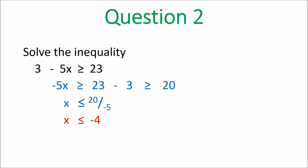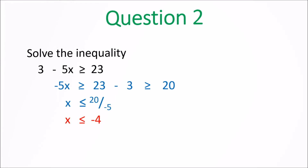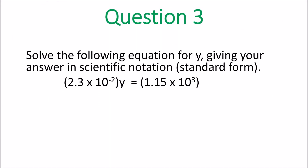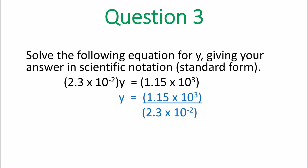Remember you have to switch the inequality around once you divide or multiply by a negative number. Question 3: solve for y. It's 2.3 times 10 to the negative 2 times y, so y is equal to 1.15 times 10 to the 3 divided by 2.3 times 10 to the negative 2. Use your calculator: 1.15 divided by 2.3 gives 0.5, times 10 to the 5. That's not in standard form — move the decimal point one place to the right: y is equal to 5 times 10 to the 4.